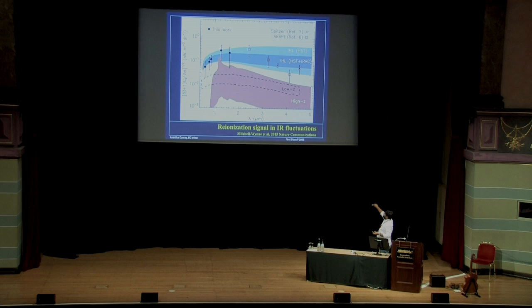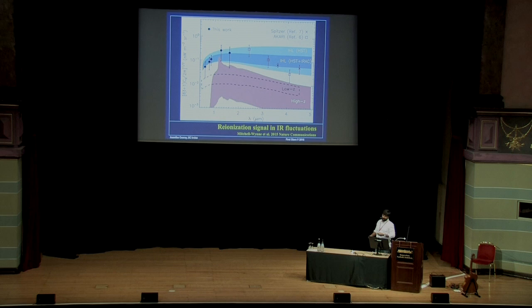We can start to work on this and try to produce models. The models, at least as we describe in this paper, involve two key parts. One is what I call IHL, the intra-halo light.